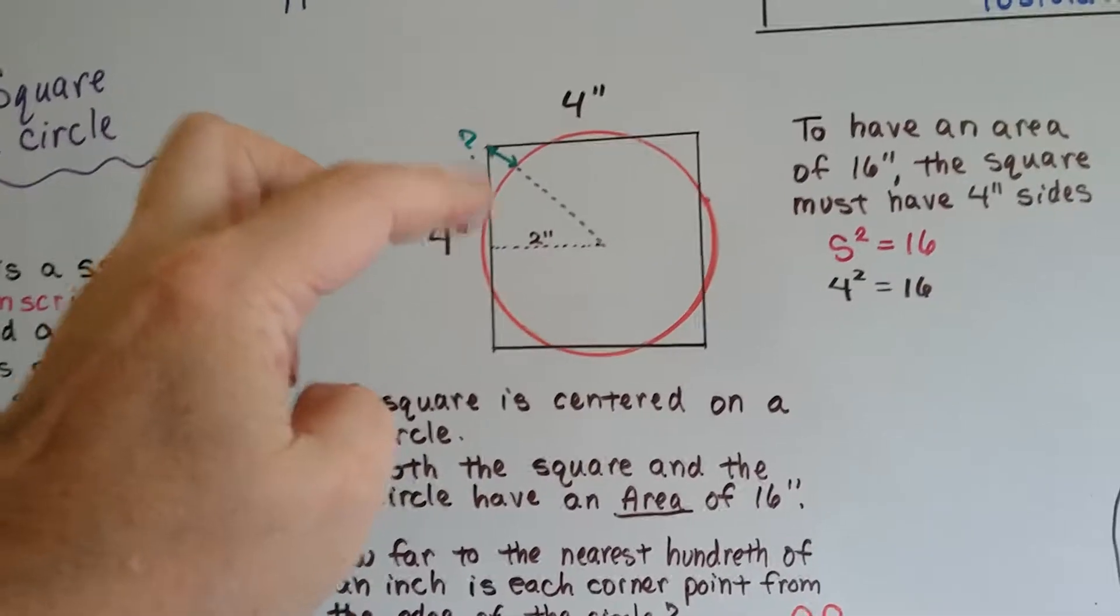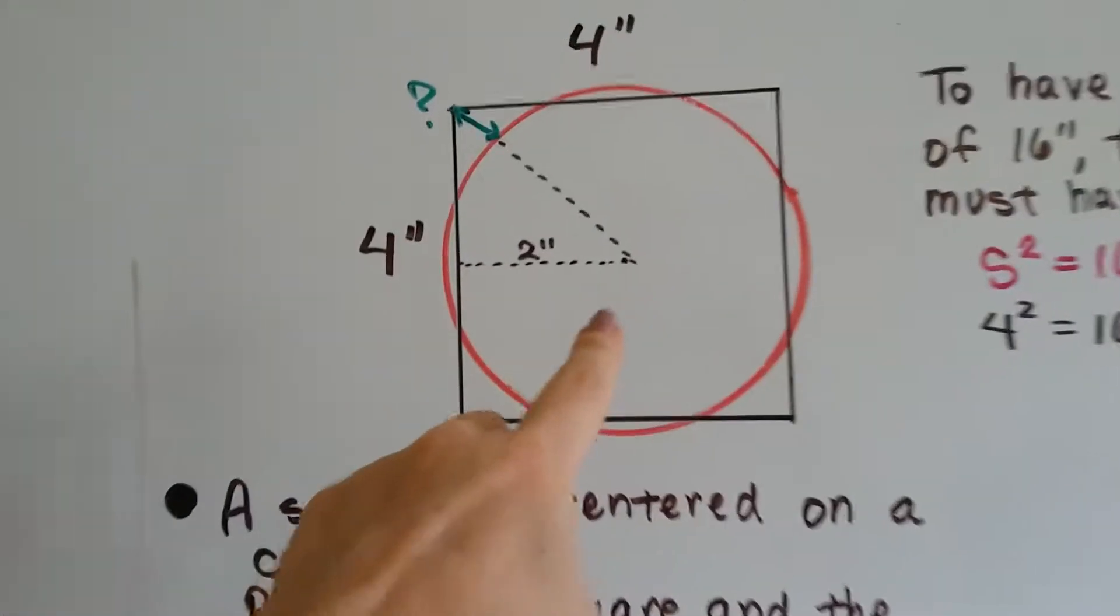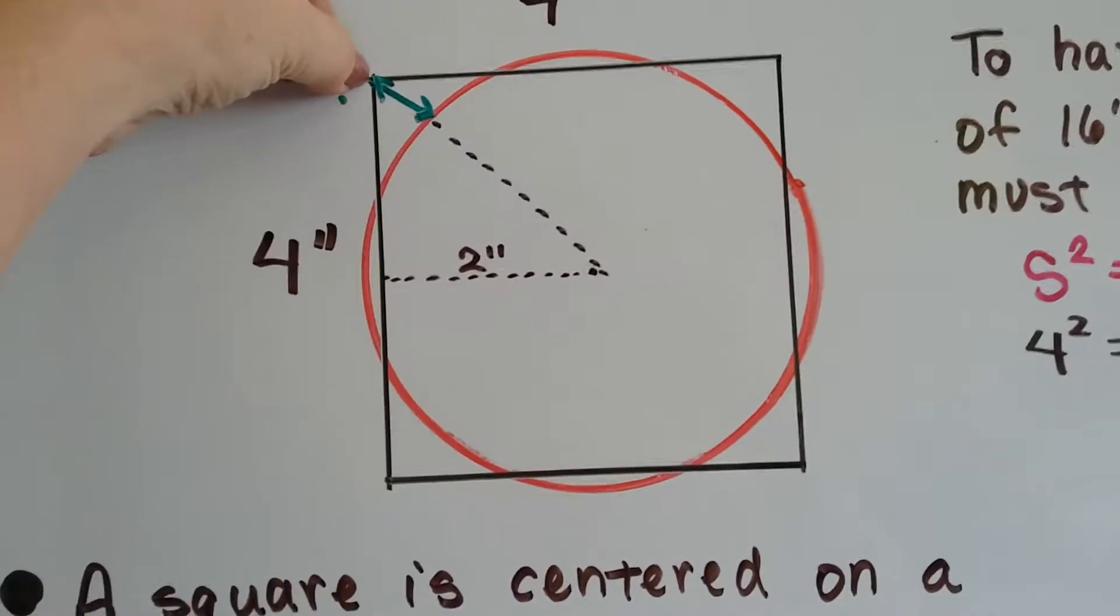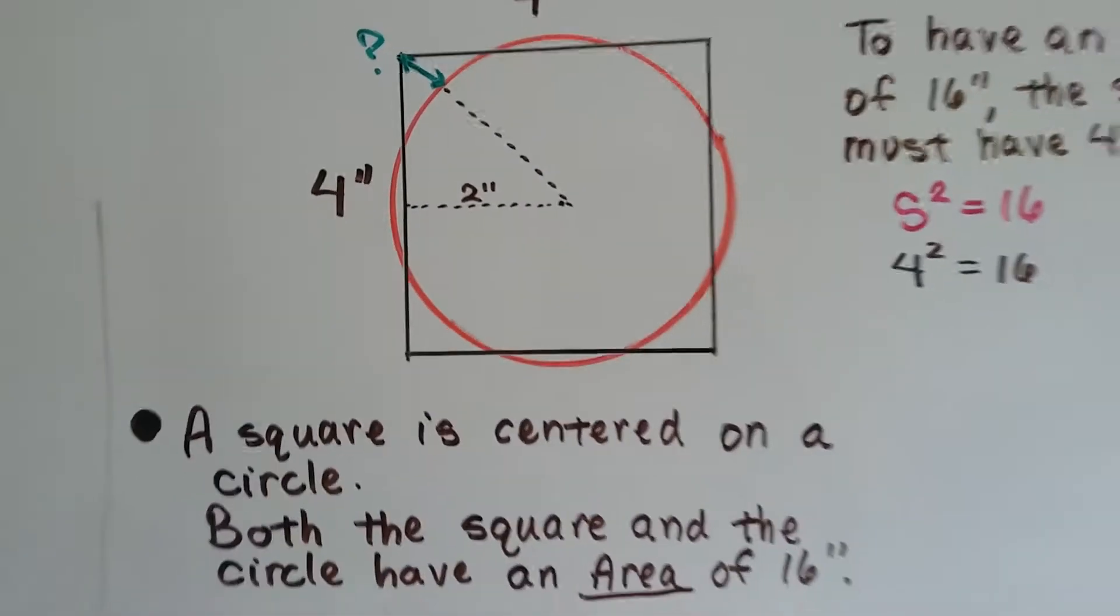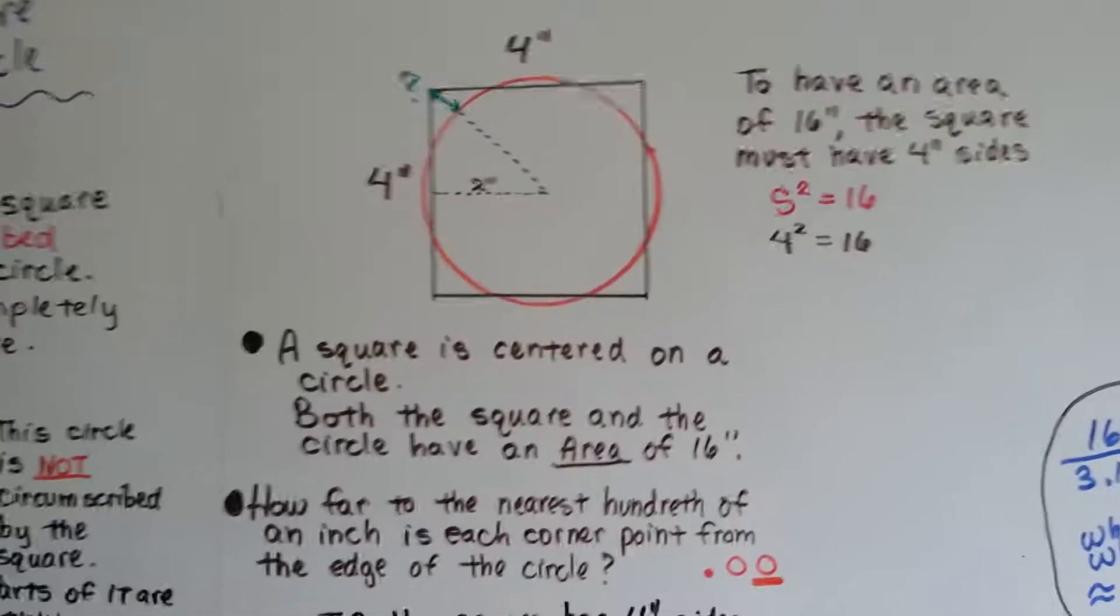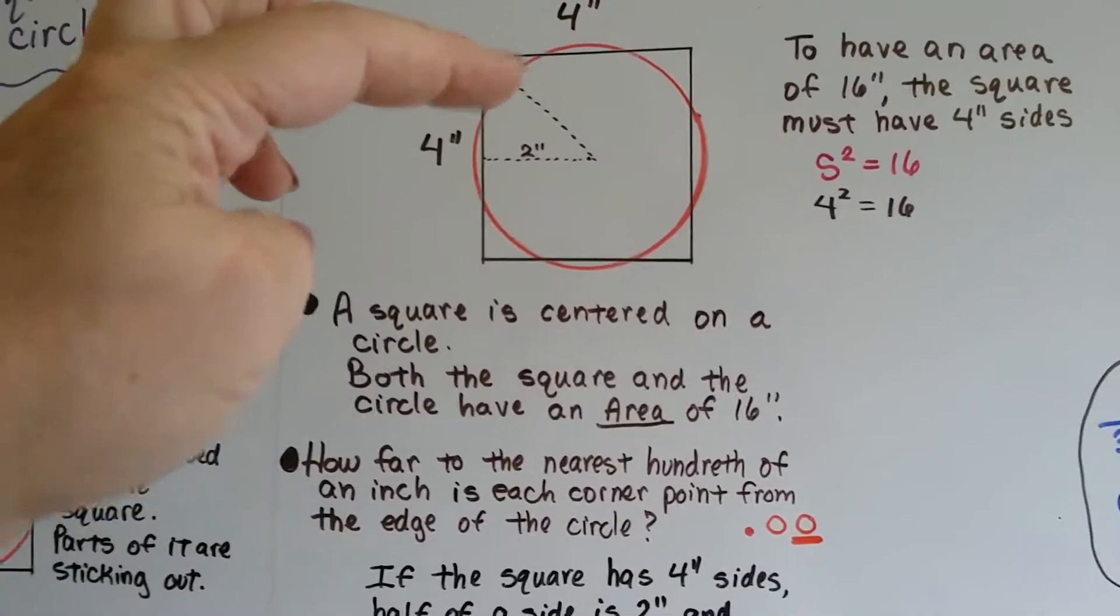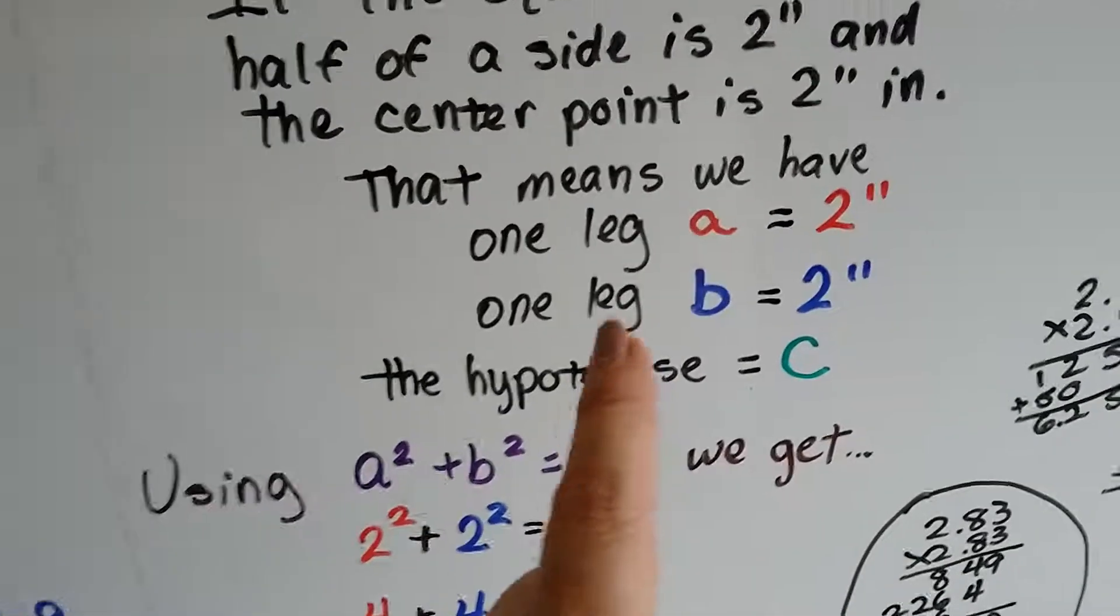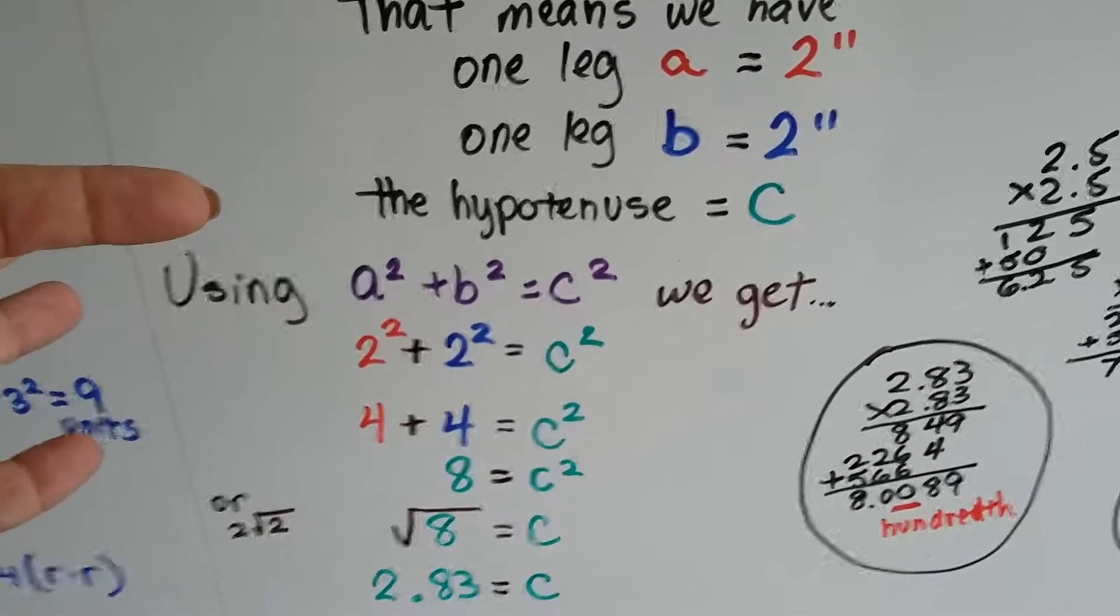So that means we have one leg that's two inches and another leg that's two inches and a hypotenuse C. So we're going to have a two inch leg, a two inch leg and our hypotenuse C. And the hypotenuse is going to run from this center point all the way to this point outside on the edge of the square. So we know that we've got a two inch leg, a two inch leg and a hypotenuse. So we use the Pythagorean theorem.